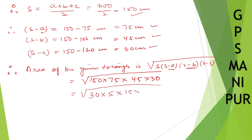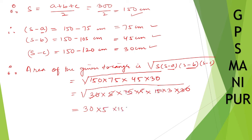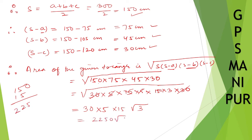Simplifying inside the square root: taking out 30 squared, 5 squared, and 15 squared, we get 30 into 5 into 15 outside the root, with only 3 remaining inside. That gives 2250 square root of 3 square centimeters. That's all, thank you so much. We will meet in the next video.